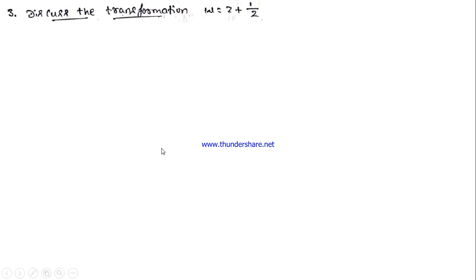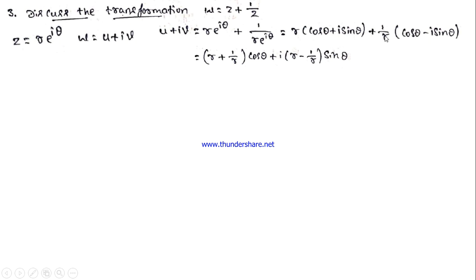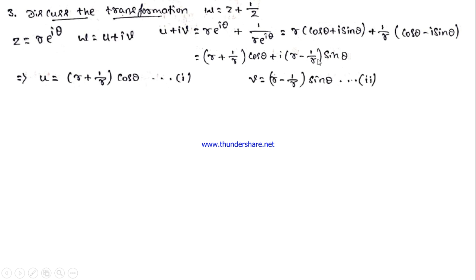Now let us discuss the transformation w = z + 1/z. Here we use the polar form z = r·e^(iθ) and w = u + iv. Then w = r·e^(iθ) + (1/r)·e^(−iθ) = (r + 1/r)cos θ + i(r − 1/r)sin θ. So the real part is u = (r + 1/r)cos θ and the imaginary part is v = (r − 1/r)sin θ.